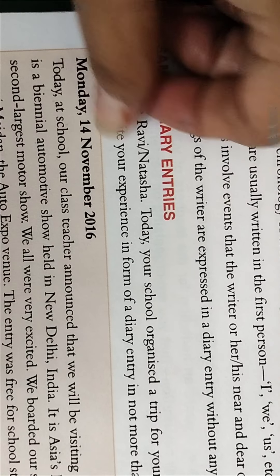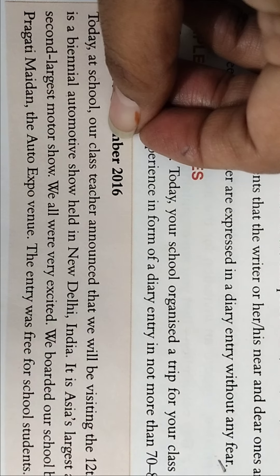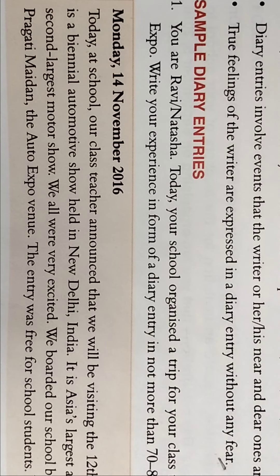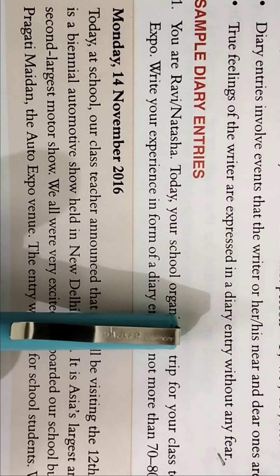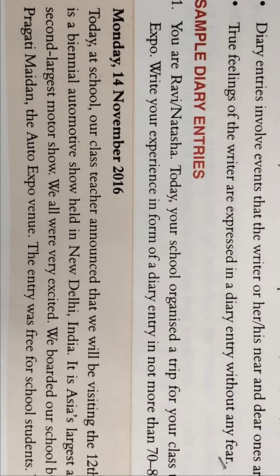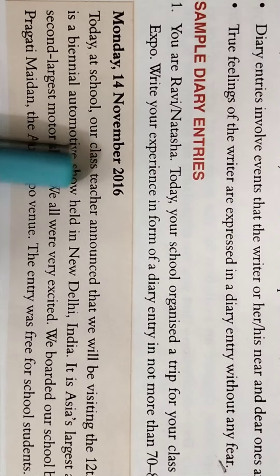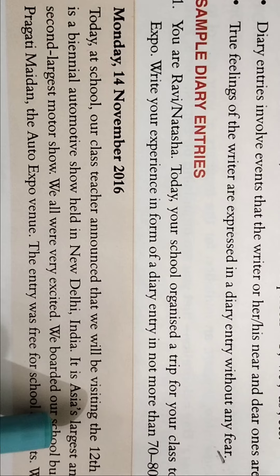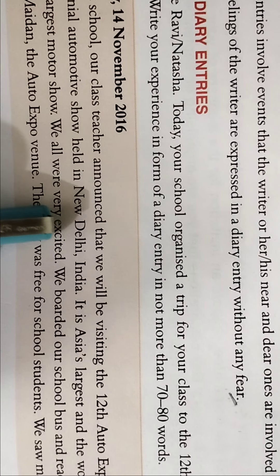Write down the day and the date with the year, then leave one line. Earlier we used to write 'Dear Diary' also, but nowadays the format has changed and they don't mention 'Dear Diary.' So you can start: 'Today at school, our class teacher announced that we will be visiting the 12th Auto Expo.' It's a biennial automotive show held in New Delhi, India, and it is Asia's largest and the world's second largest motor show.